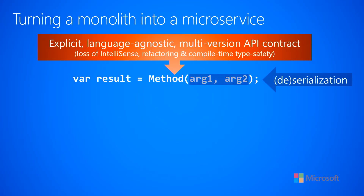The arguments you used to pass into a method now have to be serialized and sent over the wire to a server. This means the data types you use must be serializable — a severe subset of what was possible before. You have to serialize into some standard format that's part of your contract. There are many serialization technologies out there like Avro, Thrift, Protocol Buffers, Bond, JSON, and XML. Serialization requires memory allocation and walking over objects, and can be very expensive in terms of memory and time.